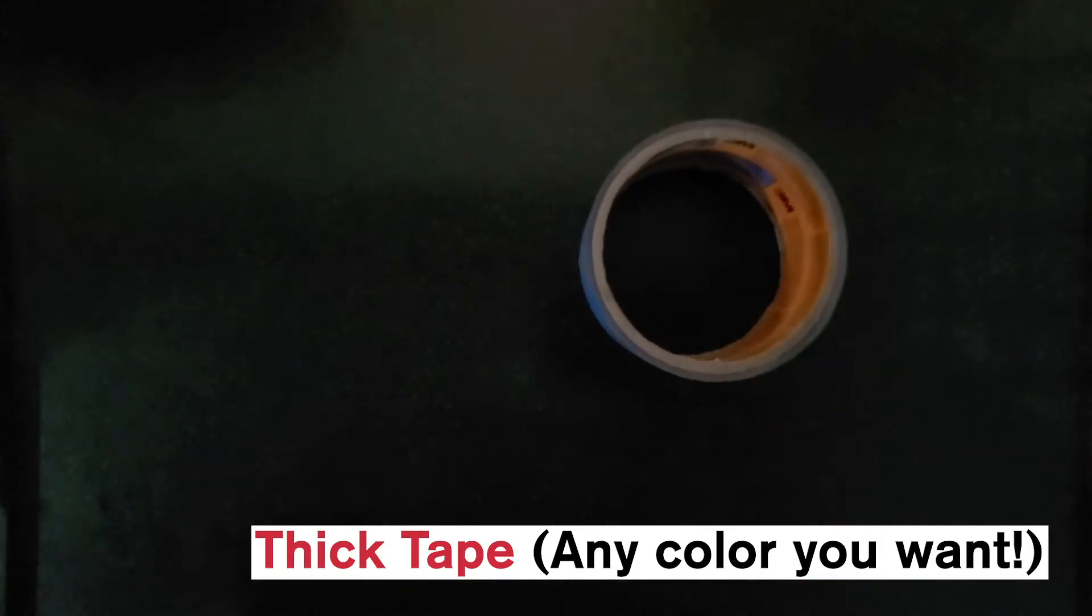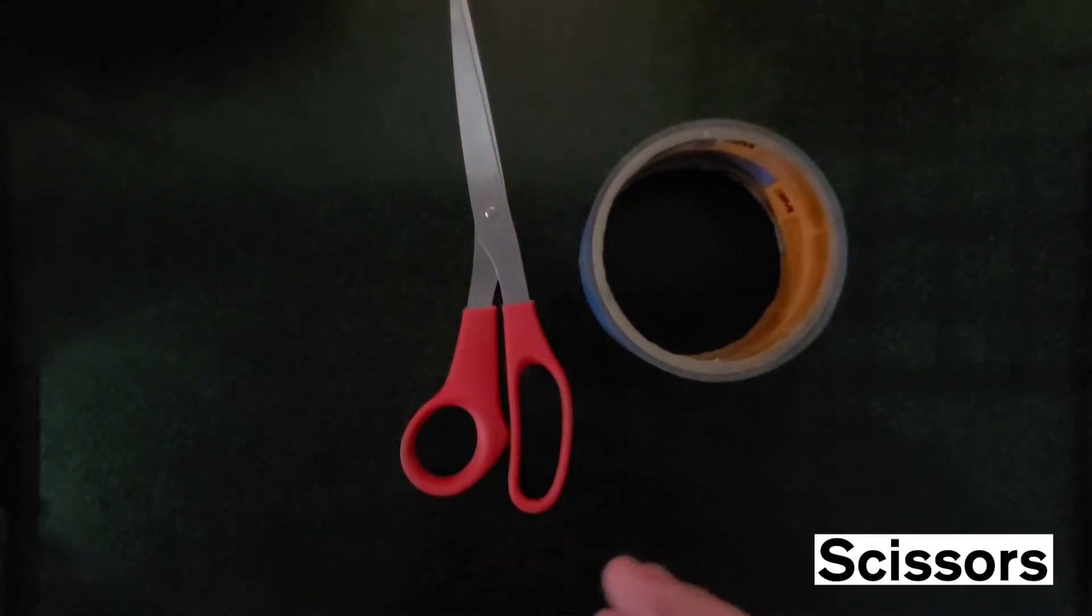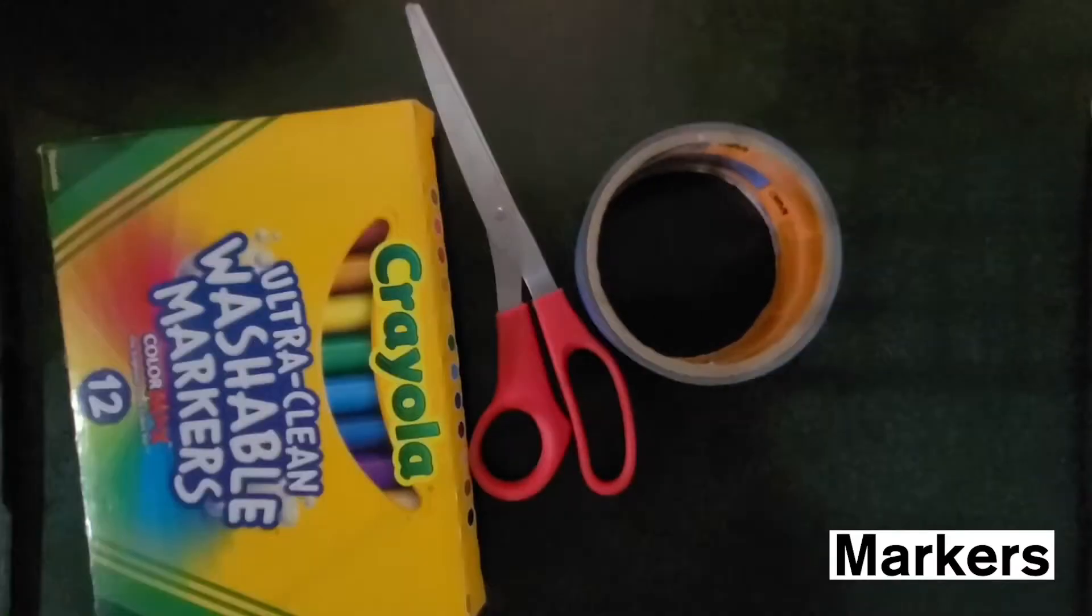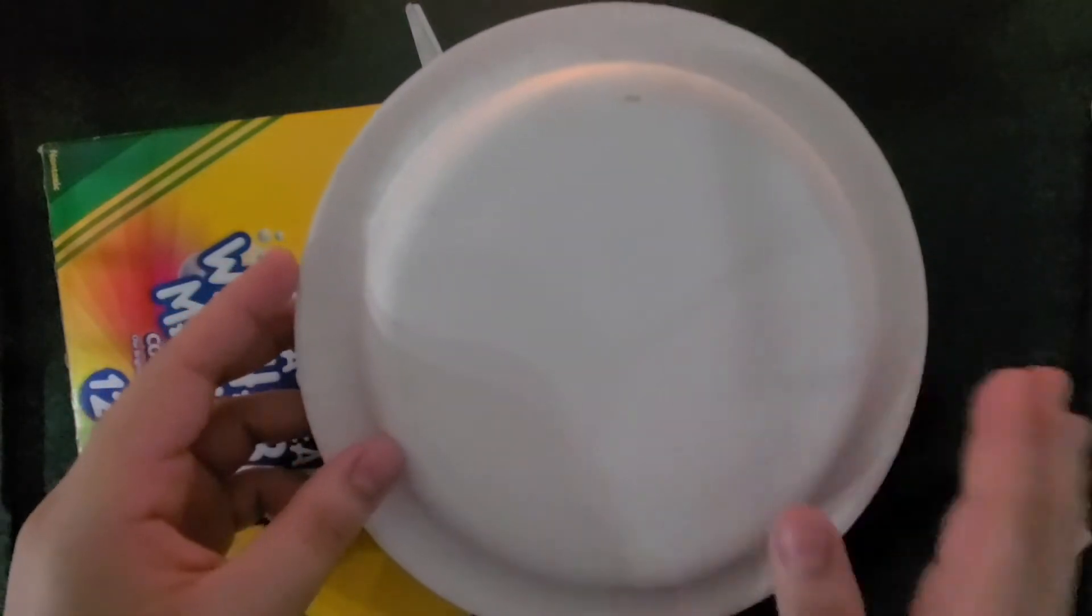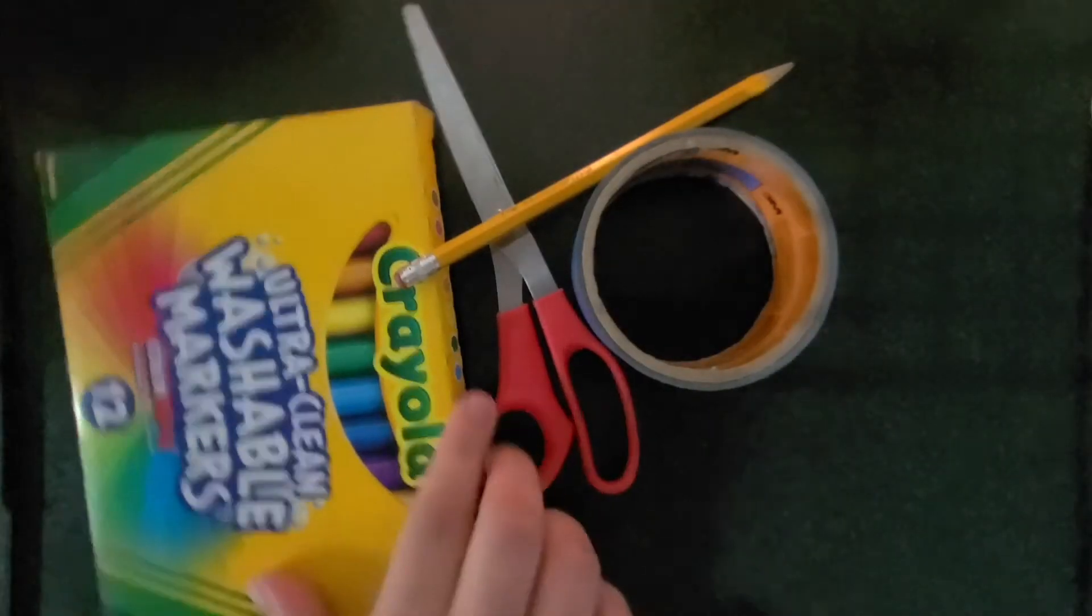Now we're going to go over our materials. What we're going to need is some thick tape, mostly colored, some scissors, markers, a pencil, and paper plates. Make sure the back part feels like paper so you can draw and color on it.